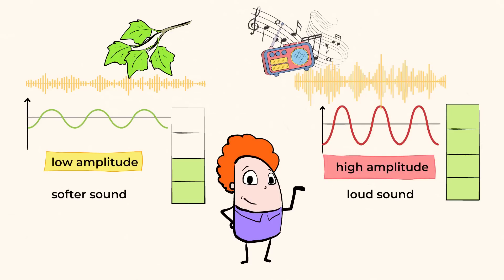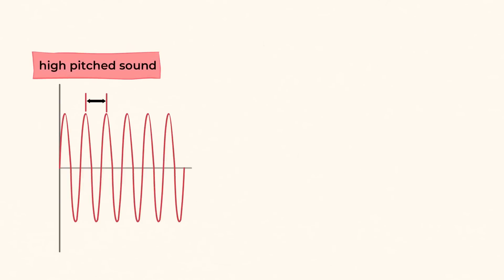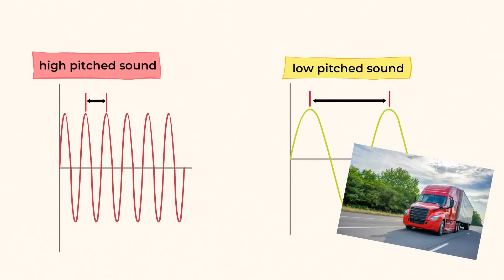The length of the wave affects what we hear too. Higher pitched sounds have a shorter wavelength. And can you guess what the wavelength of low pitched sounds are? That's right. Low pitched sounds, like a truck horn, have longer wavelengths.